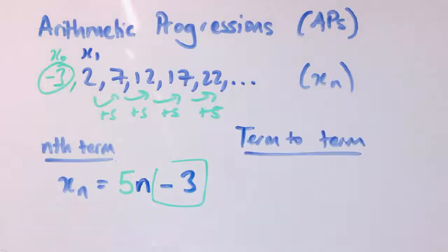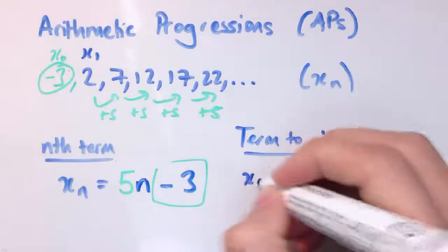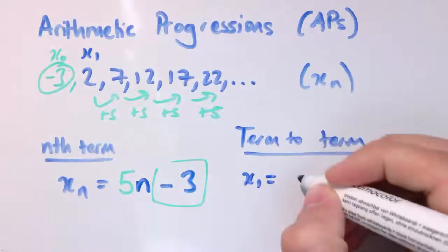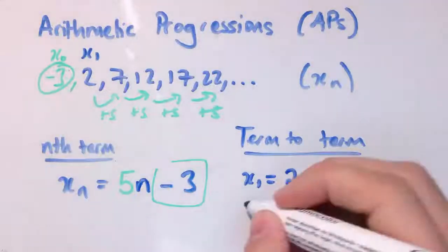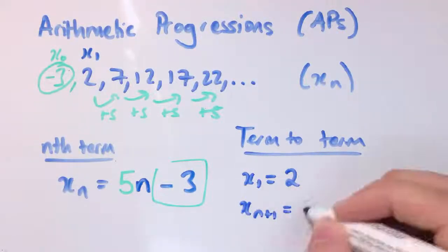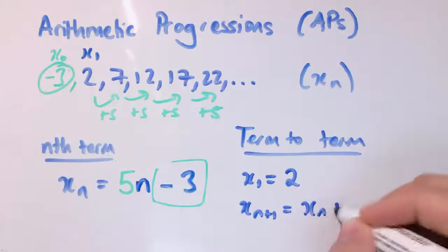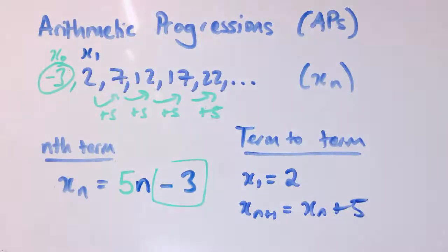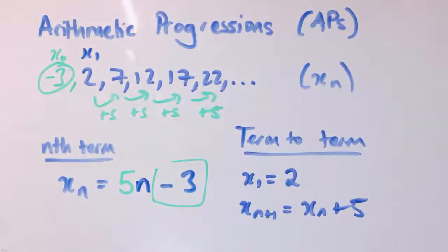For a term-to-term definition, we have to specify x_1, which is 2, and then how to get from one term to the next. x_{n+1} is x_n plus 5, because you take the previous term and add on 5 to get to the next one. So there's our term-to-term definition.